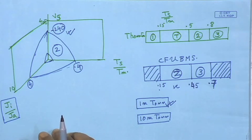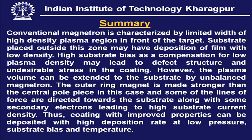In summary, conventional magnetron is characterized by limited width of high density plasma region in front of the target. Substrates placed outside this zone may receive low-density film deposition. High substrate bias as compensation for low plasma density may lead to defect structures and undesirable stress. However, the plasma volume can be extended to the substrate surface by unbalanced magnetron, where the outer ring magnet is made stronger than the central pole piece. Some lines of force are directed towards the substrate along with secondary electrons, leading to high substrate current density and improved coating properties at high deposition rate, low pressure, low substrate bias, and low substrate temperature.